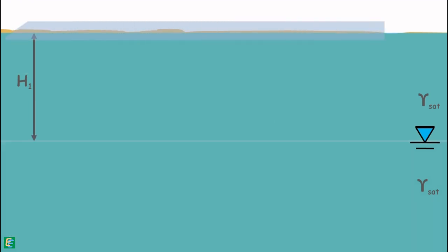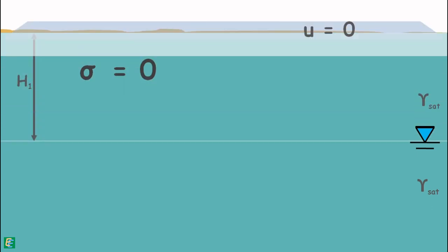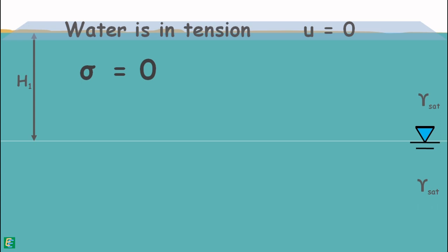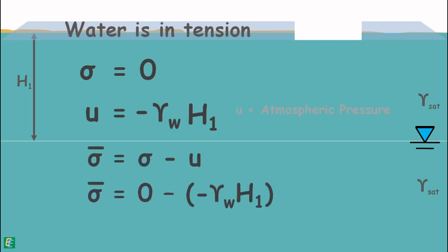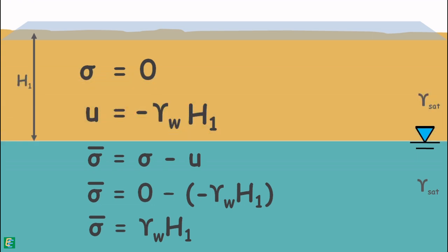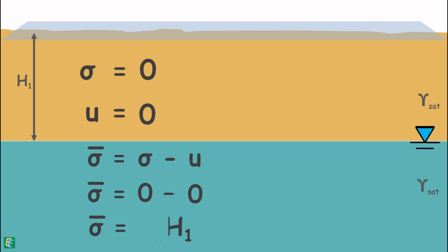Let us begin with the surface. The total stress at the surface is zero because no load is present above this plane and no water is present above this plane. But capillary water is present here and it is in tension, so pore water pressure is not zero at the surface. It is unit weight of water, gamma_w, multiplied by the height up to which the capillary water has risen, that is h1, and it is negative as it is below atmospheric pressure. So effective stress at the surface is given as total stress minus pore water pressure, which equals gamma_w × h1. If capillary water is absent in the soil, then at the surface pore water pressure would be zero and so would be the effective stress.